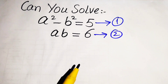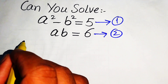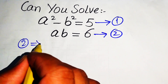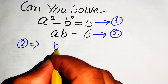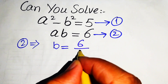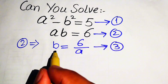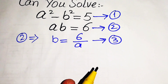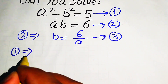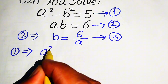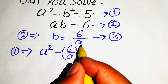We focus on equation number two first. From equation two, we move a to the right-hand side and get b = 6/a. We call this equation number three. We then substitute this value of b into equation number one, so equation one becomes a² - (6/a)².